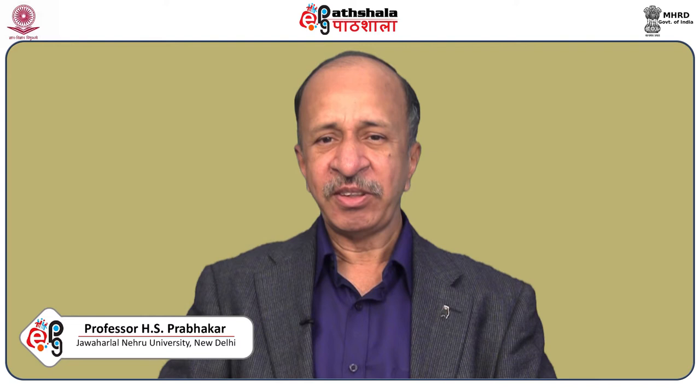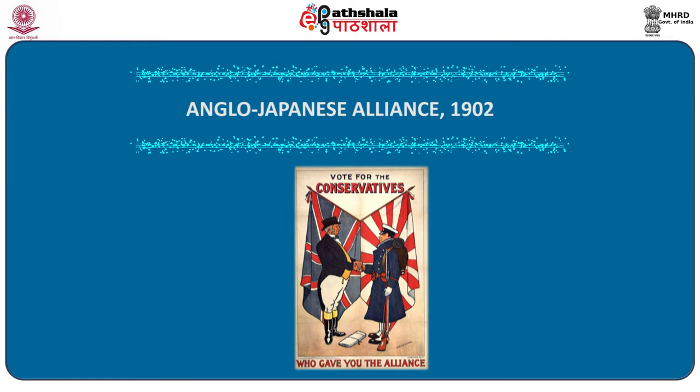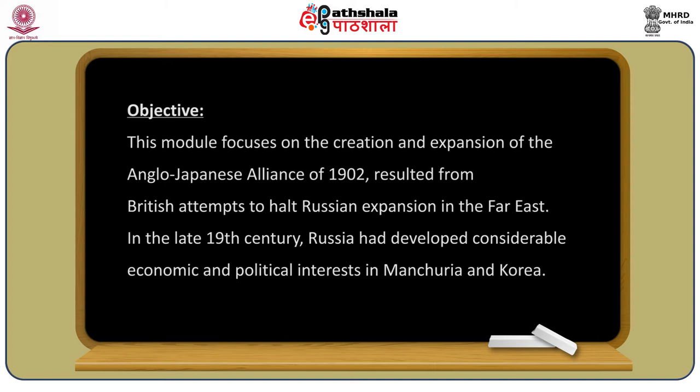Welcome to UGCE Patashala. The course is on Japanese history and society. Module number 24 specifically deals with the Anglo-Japanese alliance of 1902. This module focuses on the creation and expansion of the Anglo-Japanese alliance of 1902.